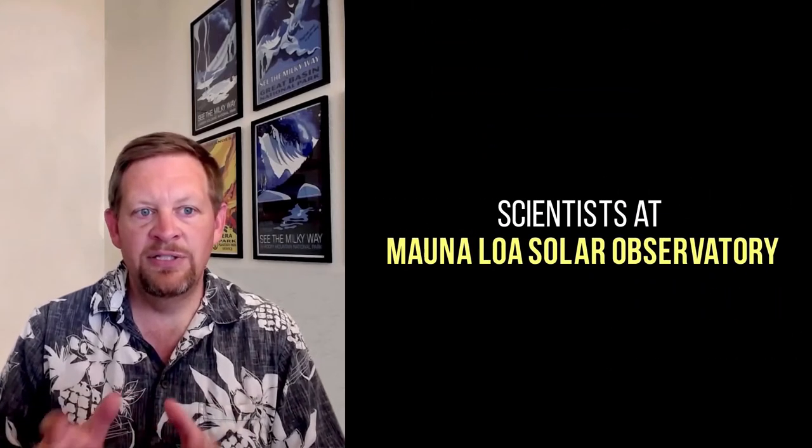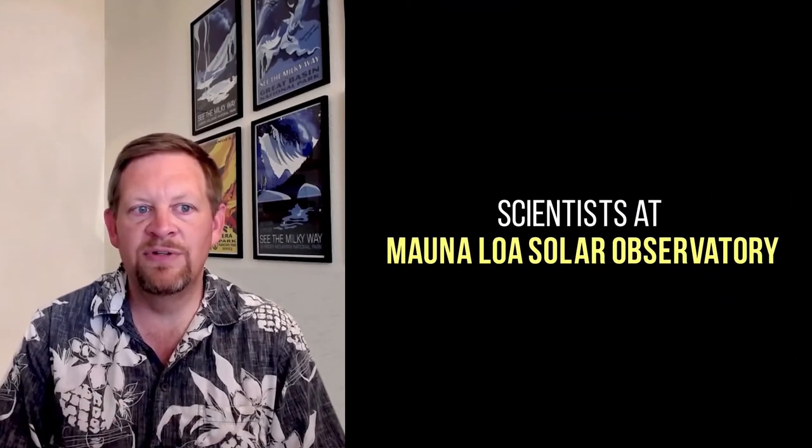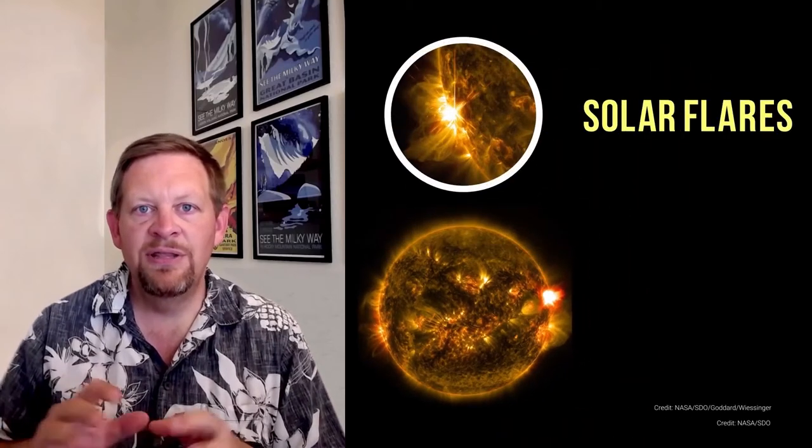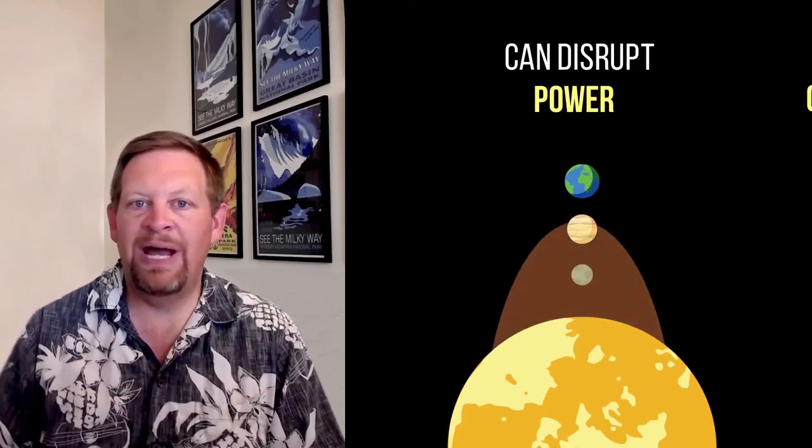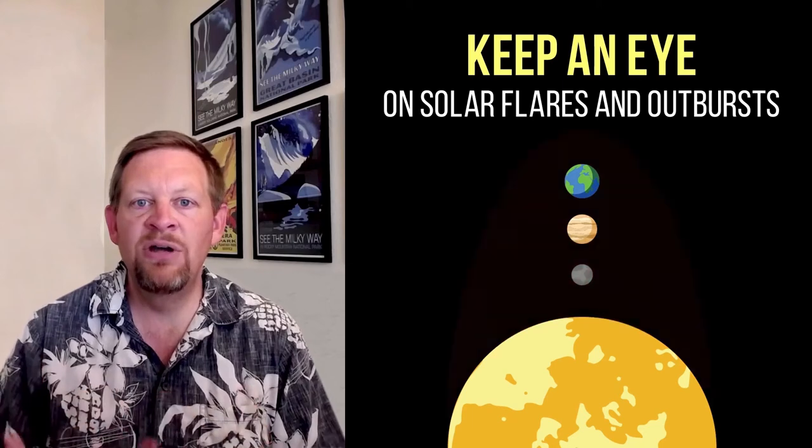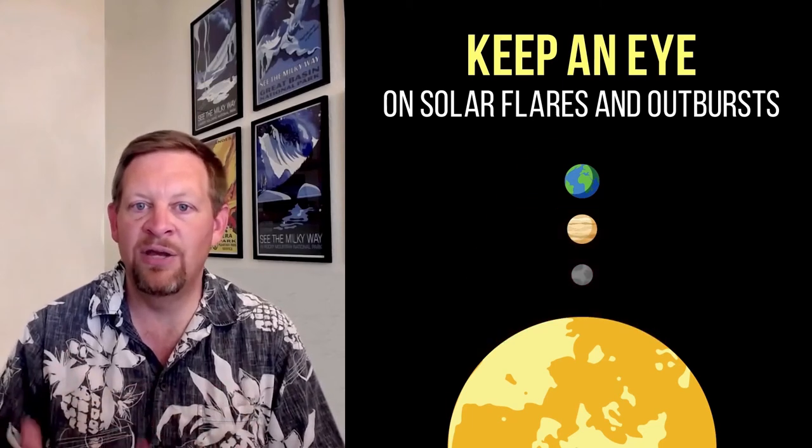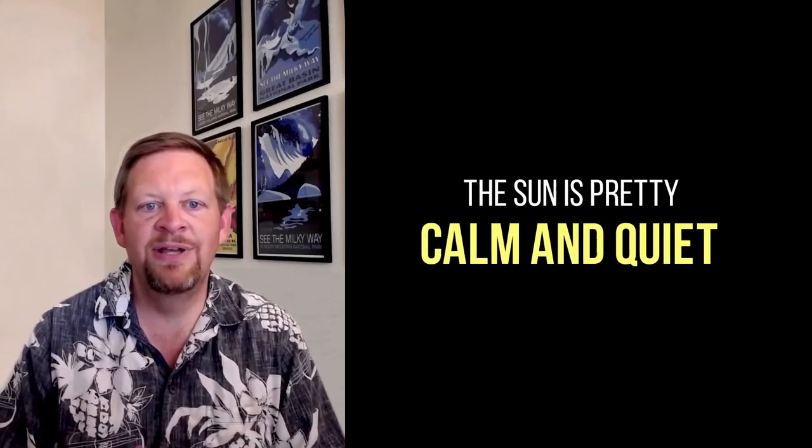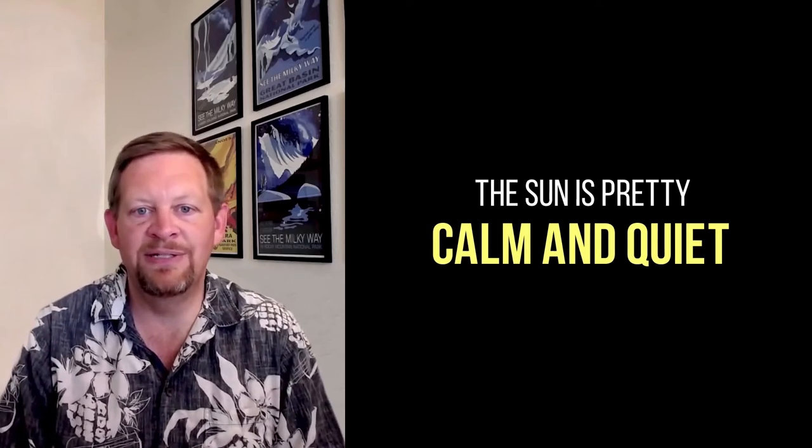Here on the Big Island, scientists at the Mauna Loa Solar Observatory monitor the Sun every day for flares and outbursts. These flares and outbursts, if they happen to hit Earth, can disrupt power and communication systems. They keep an eye on the Sun so that we know when these things are going to happen and can help protect those systems. Fortunately for us, the Sun is pretty calm and quiet these days.